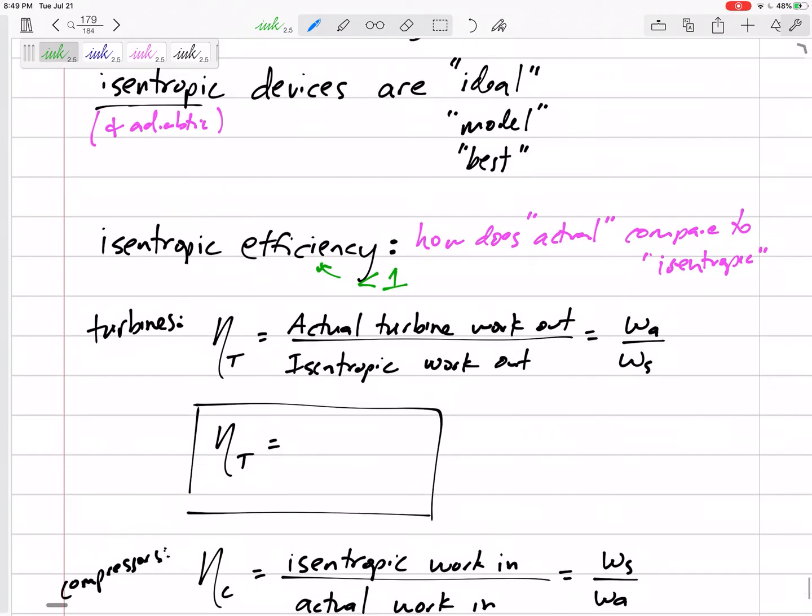Turbines: we put them in a fluid stream that rotates the turbine, and we're getting work out. An isentropic turbine would be best—we would get the most work out of it as possible. The actual turbine won't produce quite as much work. That's why we have work actual divided by work isentropic. That's our efficiency.